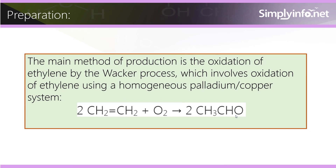The main method of production is the oxidation of ethylene by the Wacker process, which involves oxidation of ethylene using a homogeneous palladium-copper system. 2CH2=CH2 + O2 gives 2CH3CHO.